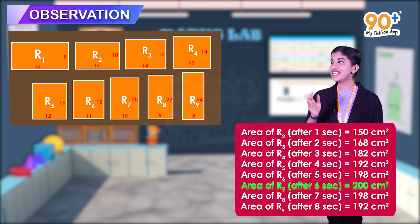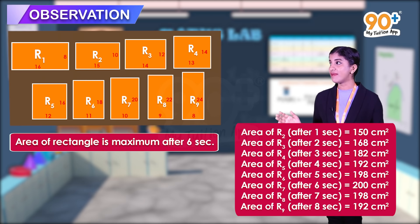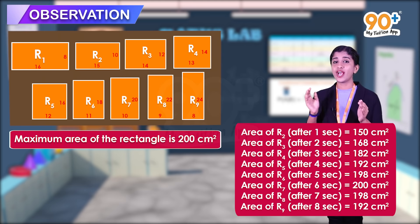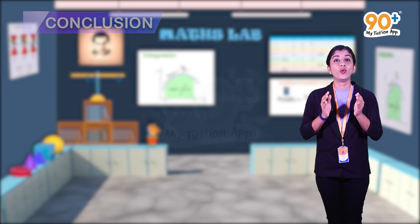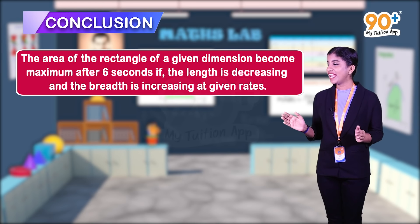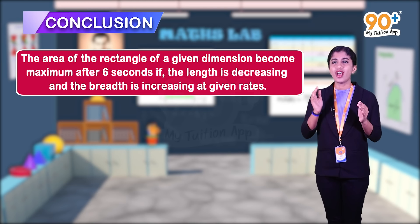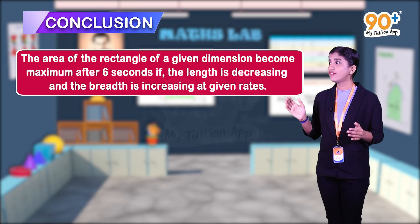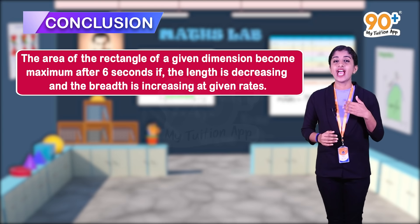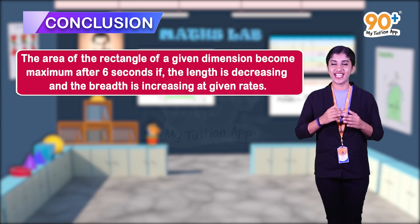So the maximum area of the rectangle is 252. The area of the rectangle is maximum after 6 seconds if the length is decreasing and the breadth is increasing at given rates.